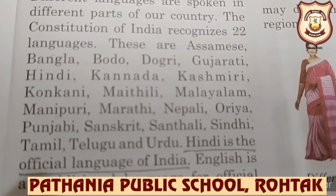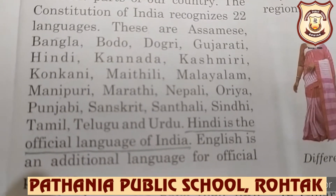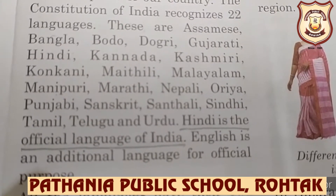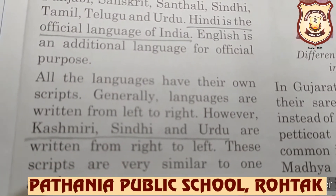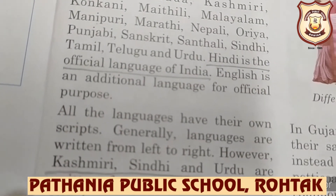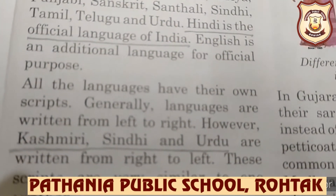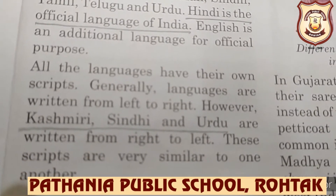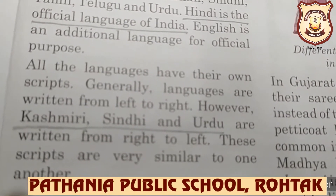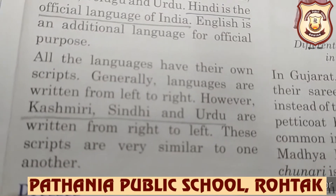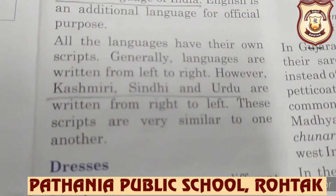Hindi is the official language of India and English is an additional language for official purposes. All languages have their own scripts — a script means a style of writing a language. Generally languages are written from left to right; however, Kashmiri, Sindhi, and Urdu are written from right to left. These scripts are very similar to one another.